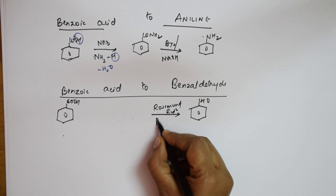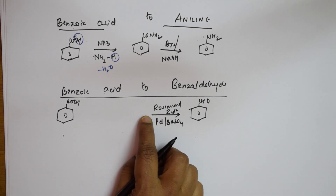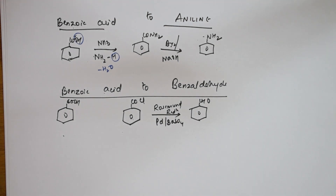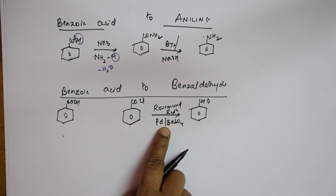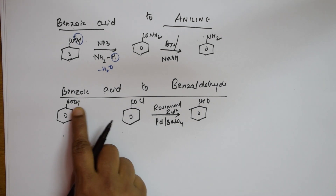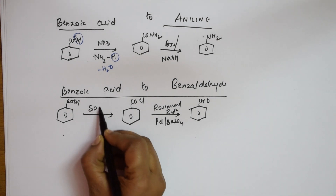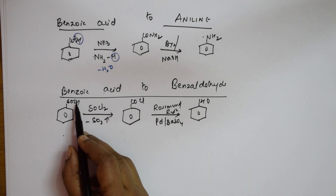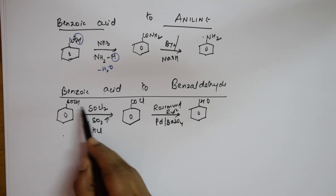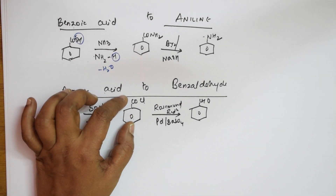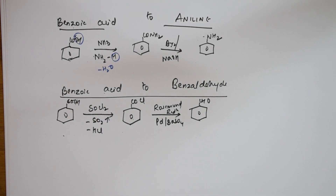Rosenmann reduction uses palladium and barium sulfate. It basically uses acyl chlorides — the group COCl, which is benzoyl chloride. Benzoyl chloride in the presence of Pd and BaSO4 as reducing agent gives benzaldehyde. But how do I get benzoyl chloride? I go back to thionyl chloride SOCl2 — SO2 comes out as sulfur dioxide gas, HCl also comes out, and the leftover Cl joins here. So benzoic acid → SOCl2 → benzoyl chloride → Rosenmann reduction → benzaldehyde.